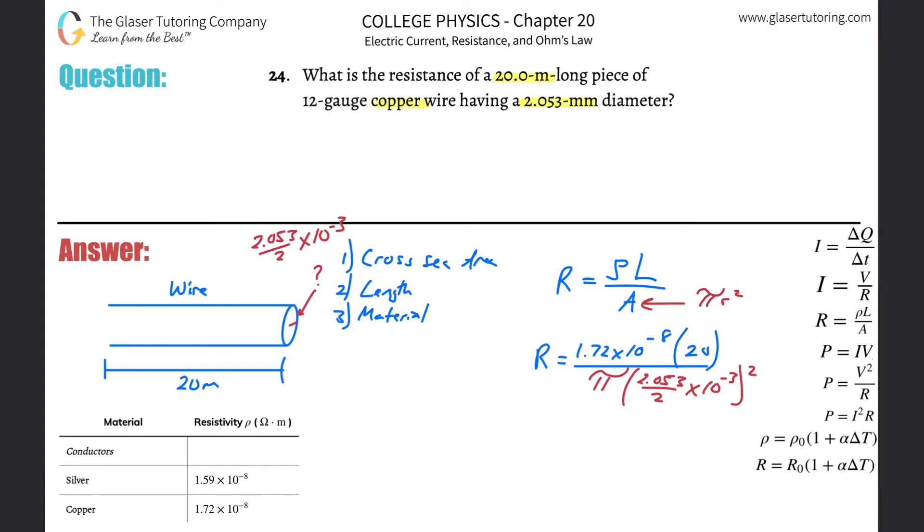Now you do not have to plug that all into your formula like that. You can calculate that separately and then just plug in the number, it doesn't matter. So 1.72 times 10 to the minus 8, multiplied by 20, divided by pi times parentheses 2.053 divided by 2 times 10 raised to the minus 3, and that whole thing is then squared.